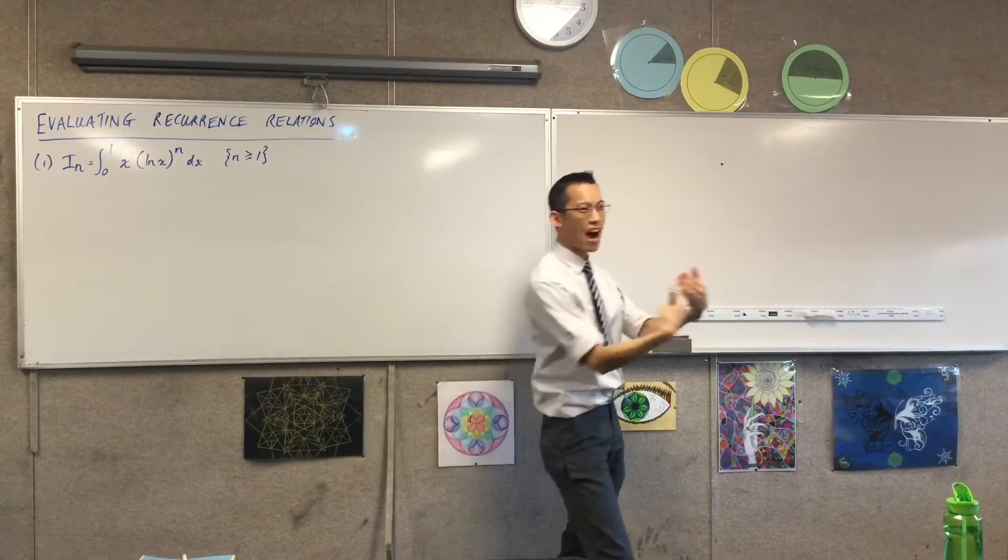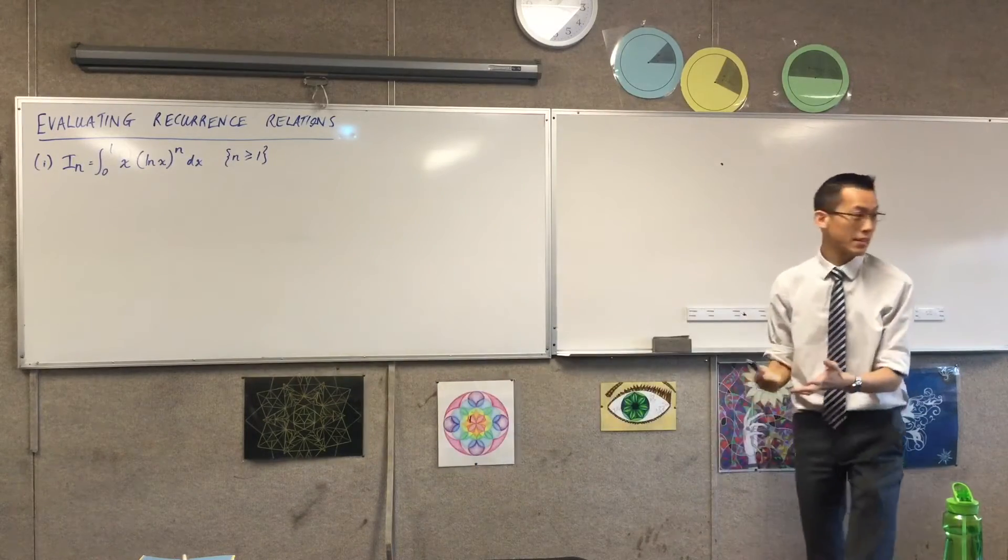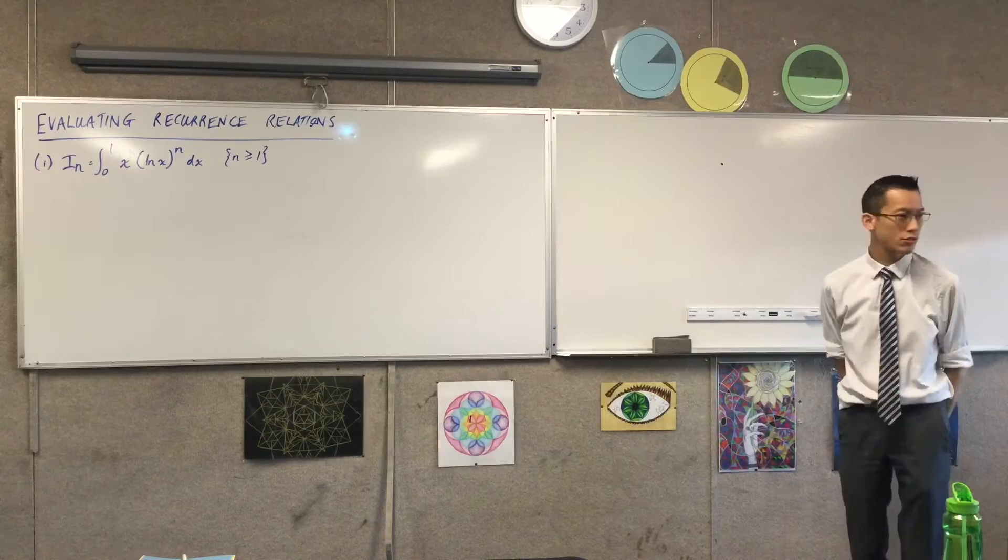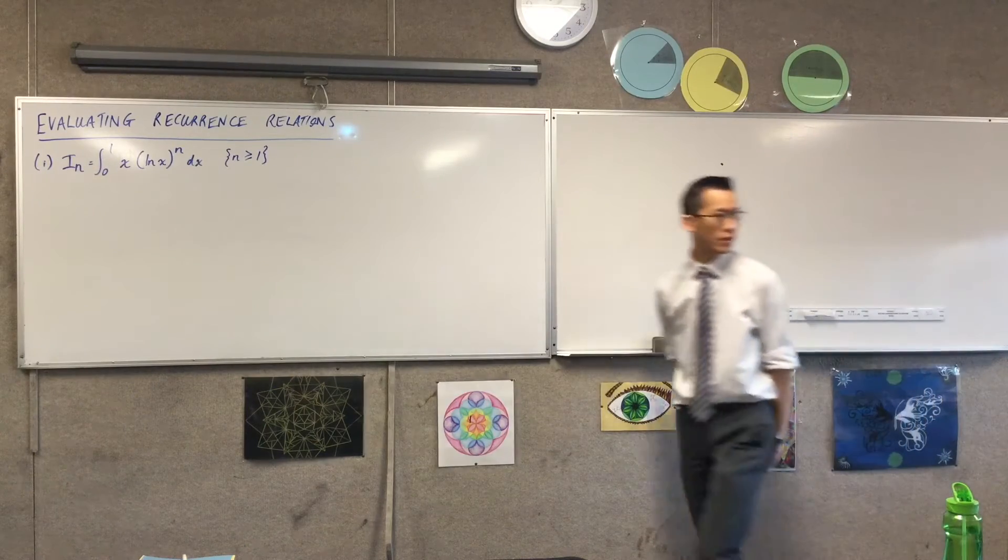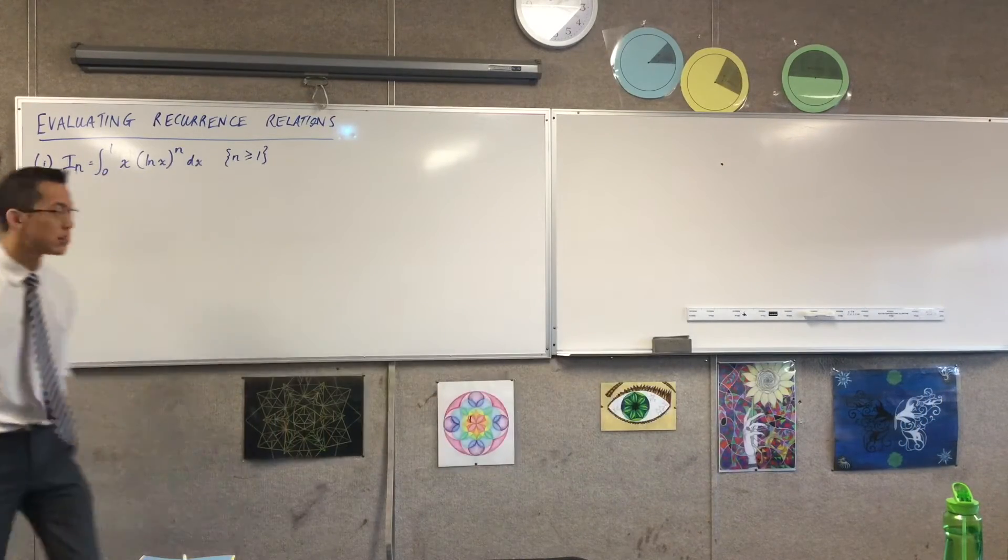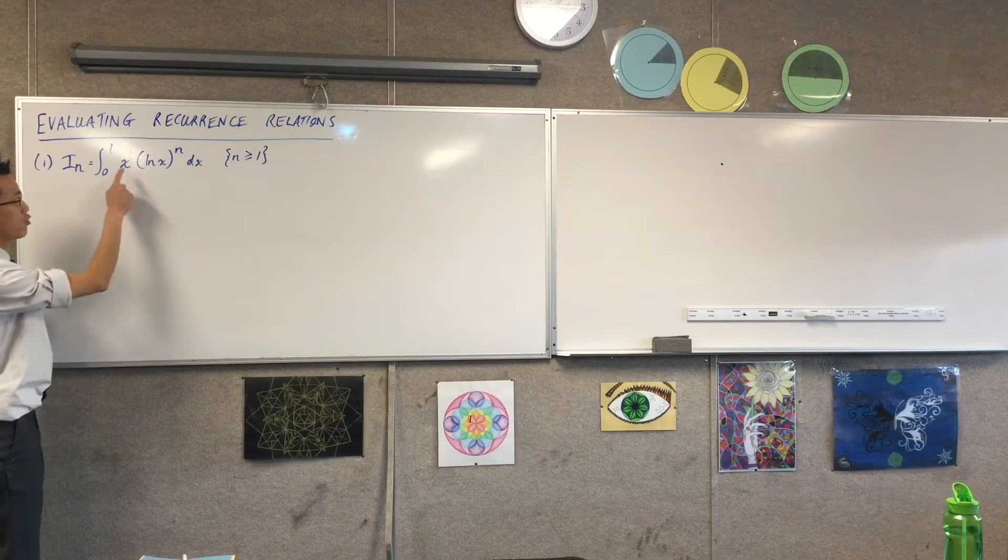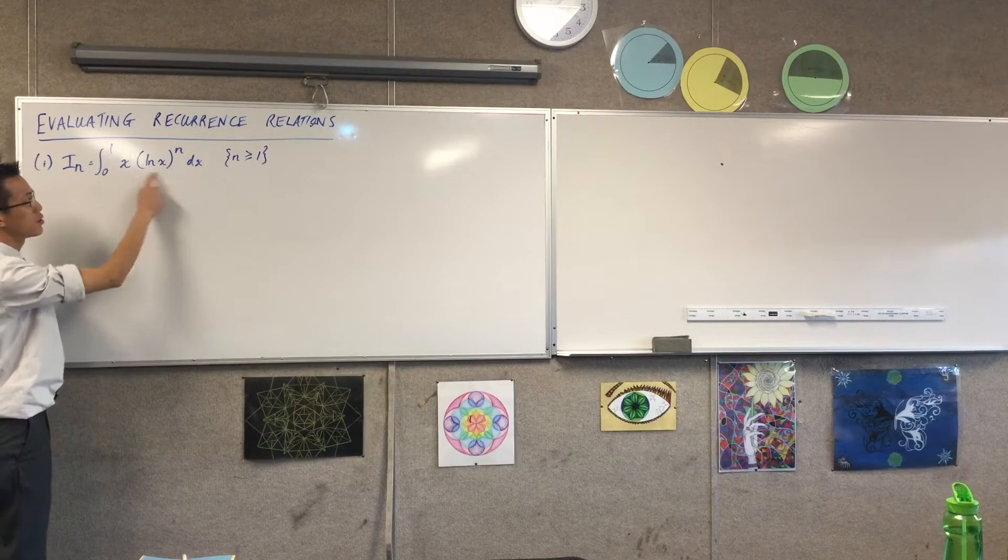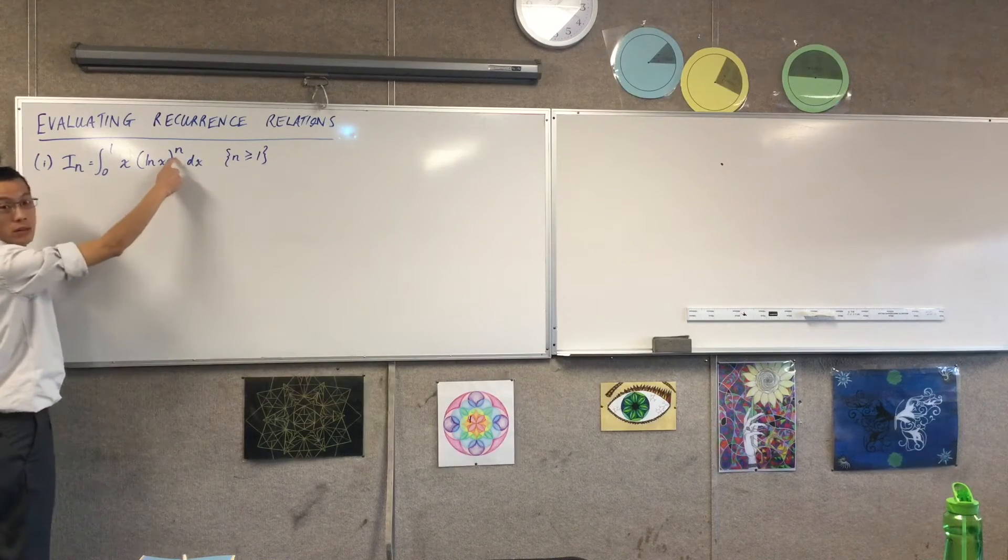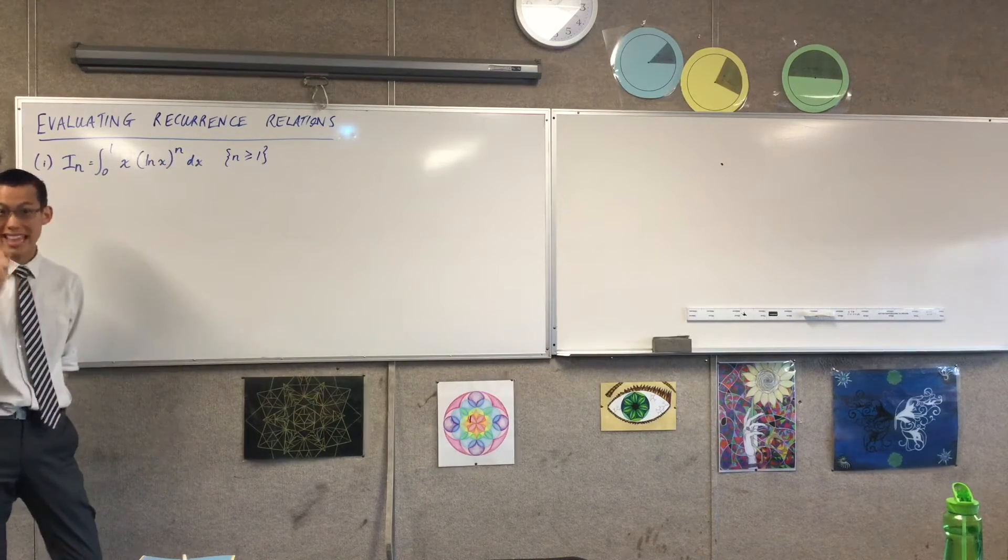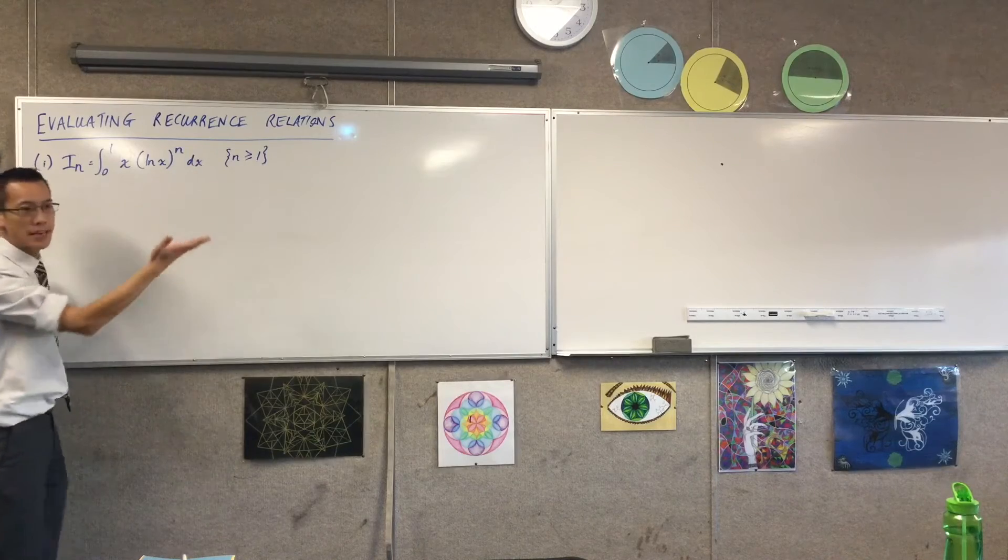You can see, if I allowed n equals 0 as a case, what would that integral be? It would be the integral from not to 1 of x times 1, because it's power of 0. It's not x that's 0, it's n that's 0 with respect to x.